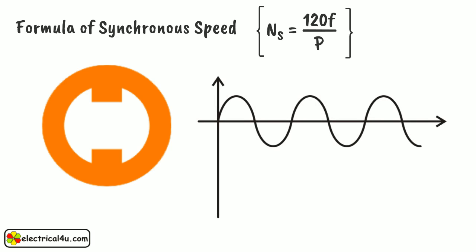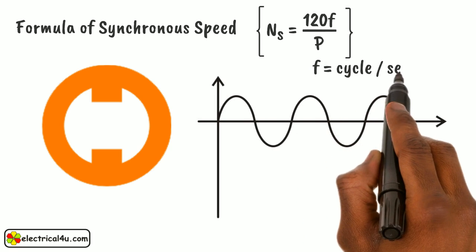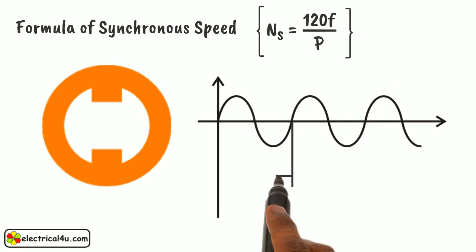We all know that frequency f means cycles per second. Then, time required for one cycle is 1 by f second. It is called time period and denoted by capital T. Therefore, T equals 1 by f.